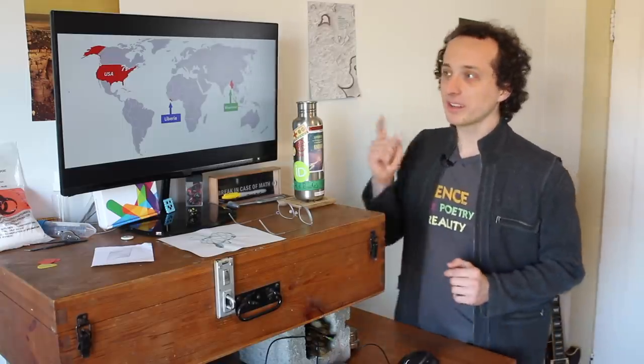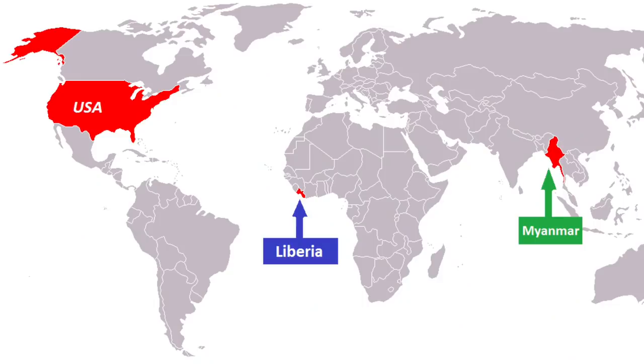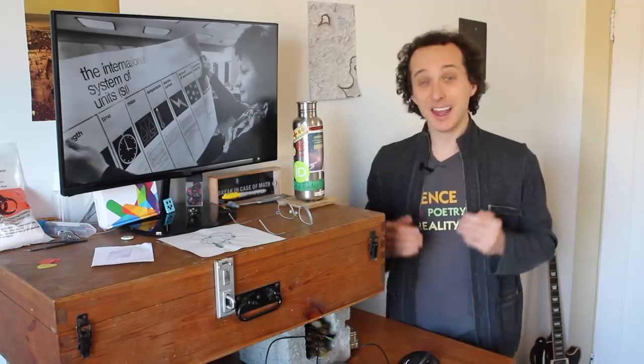Now, what does this map show? Well, it has Liberia, Myanmar, and the USA. These are the three countries in the world — the only three — that still use the imperial system.